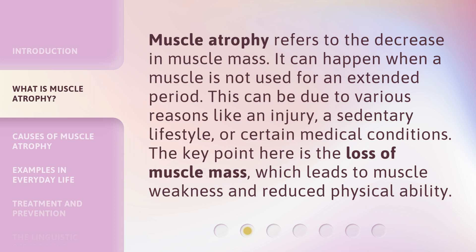Muscle atrophy refers to the decrease in muscle mass. It can happen when a muscle is not used for an extended period. This can be due to various reasons like an injury, a sedentary lifestyle, or certain medical conditions. The key point here is the loss of muscle mass, which leads to muscle weakness and reduced physical ability.